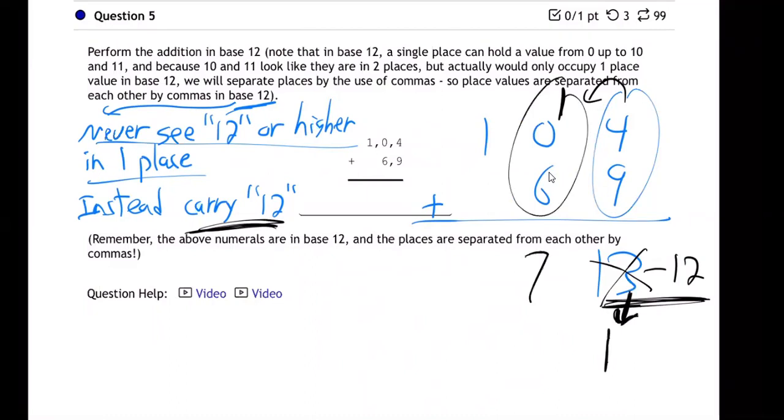Next column, 6 and 1 make 7. That's fine. Next column, 1. There's our answer. 1, 7, 1.